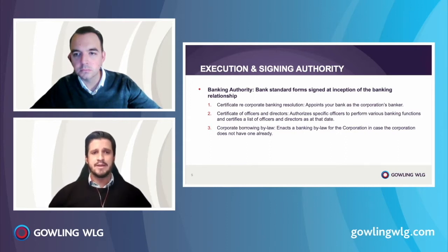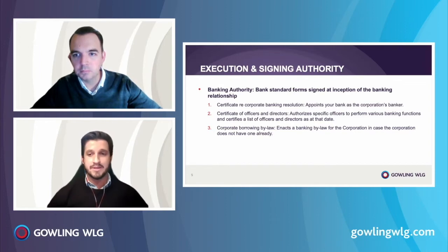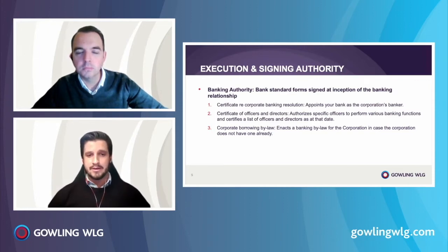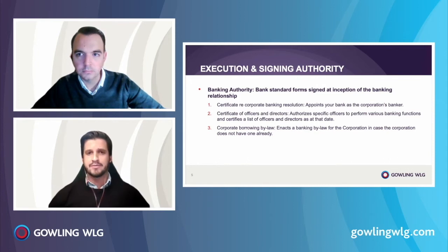In the past, it was common practice for a corporation to appoint a specific lender as their banker — it was something of a status symbol. In those cases, the borrowing bylaw would be limited to borrowing from a specific lender and sometimes up to a specific amount. We still encounter those sorts of borrowing bylaws on occasion, and in those instances it is necessary to adopt a new, more generic borrowing bylaw that's not specific to any lender or amount. Those instances are increasingly uncommon, but when we do encounter them, it's usually when dealing with a small or mid-sized family business that hasn't kept their corporate records up to date.